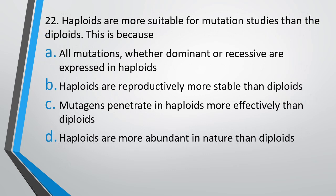Question number 22. Haploids are more suitable for mutation studies than diploids. This is because: Option A: All mutations, whether dominant or recessive, are expressed in haploids. Option B: Haploids are reproductively more stable than diploids. Option C: Mutagens penetrate haploids more effectively than diploids. Option D: Haploids are more abundant in nature than diploids. The correct answer is Option A — all mutations whether dominant or recessive are expressed in haploids.